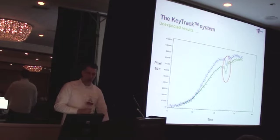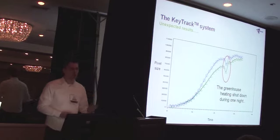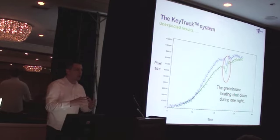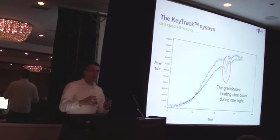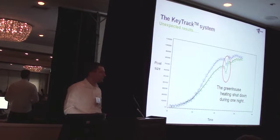So we took a look at what happened, and in fact, the greenhouse heating that night shut down, unfortunately. Of course, an error, but it showed us that the effect of that temperature gives an effect upon the plant and the leaf angles, and that's directly measured and spotted by the system.